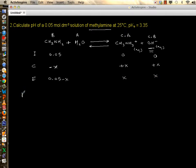Equilibrium established: 0.05 take away x, x and x. Then we go after equilibrium constant. Since it's a base, Kb, and it's 10 raised to negative pKb, 10 to negative 3.35, which is 4.37 times 10 to minus 4.